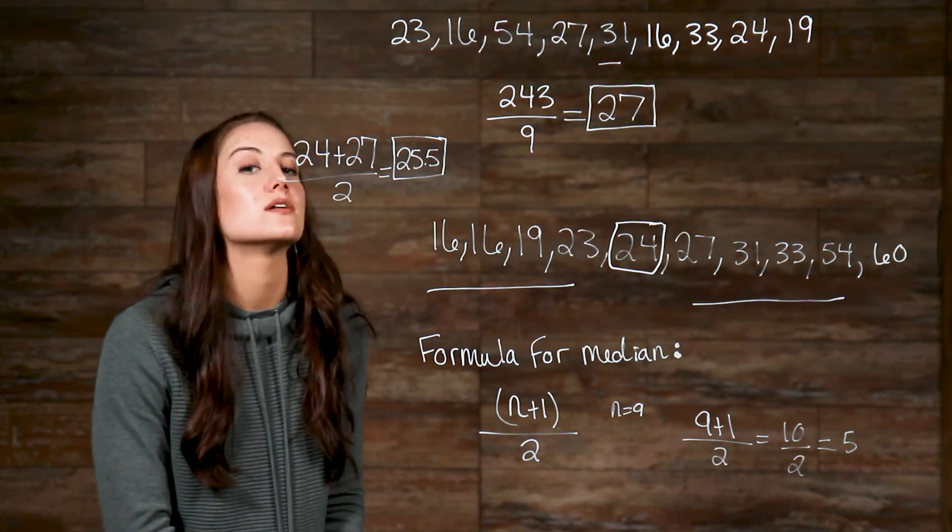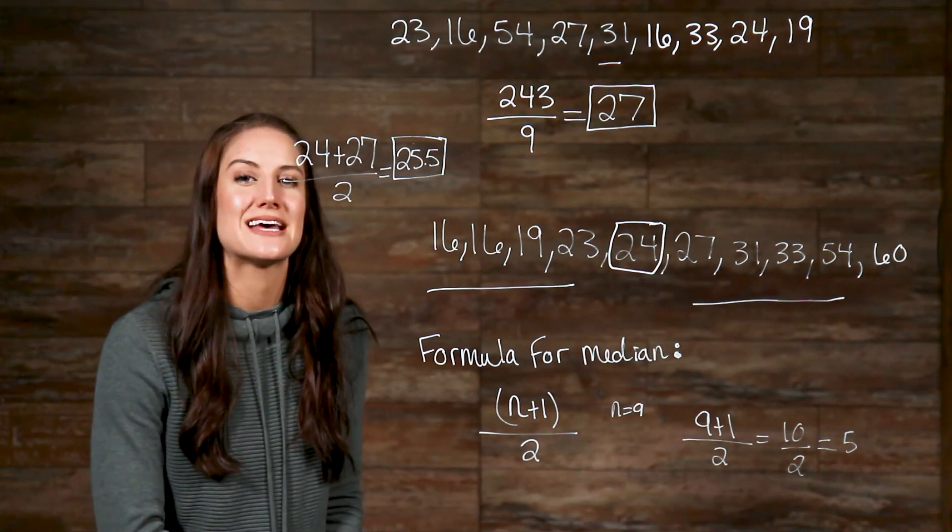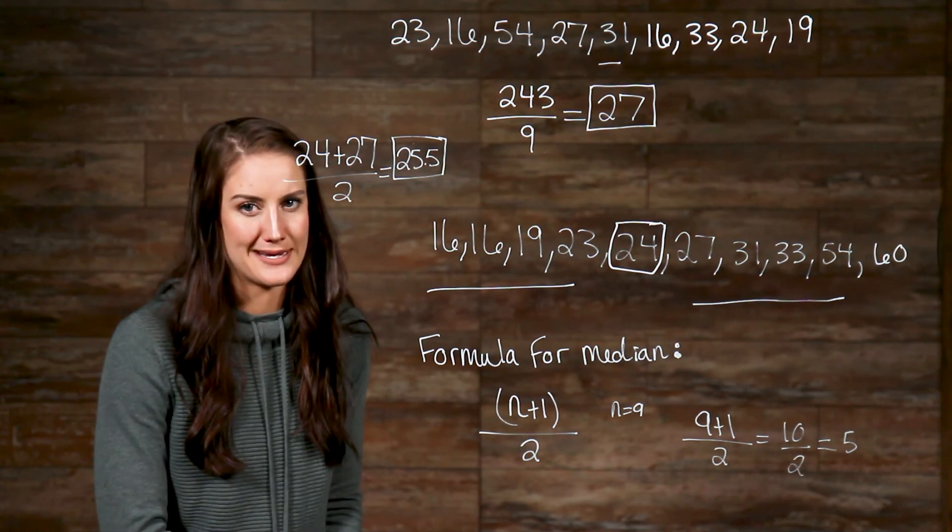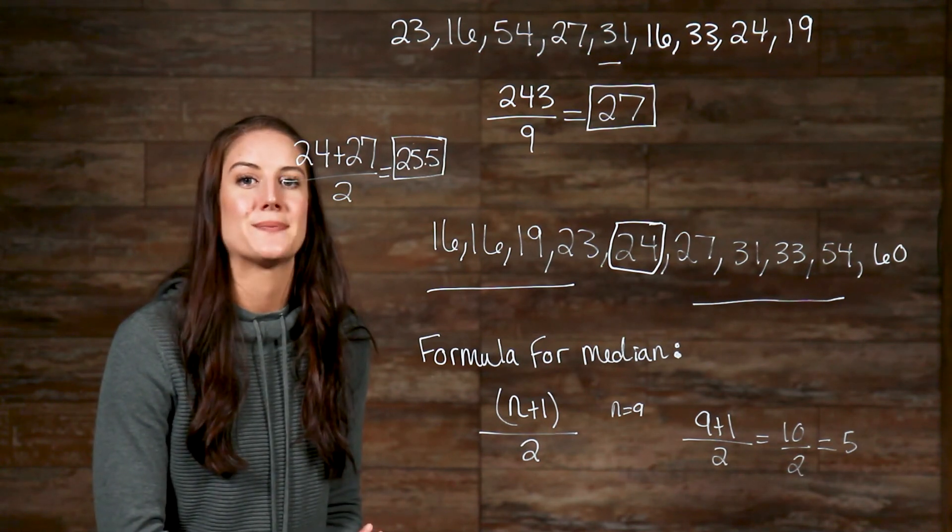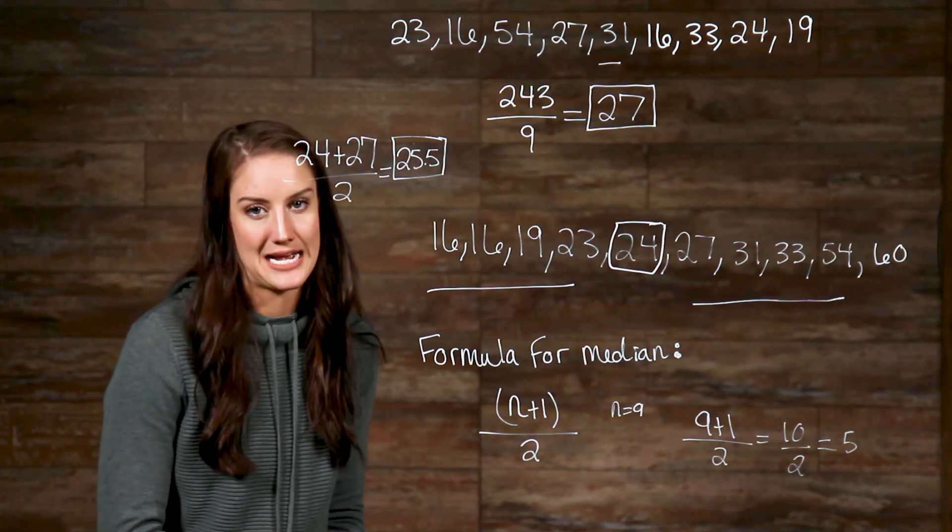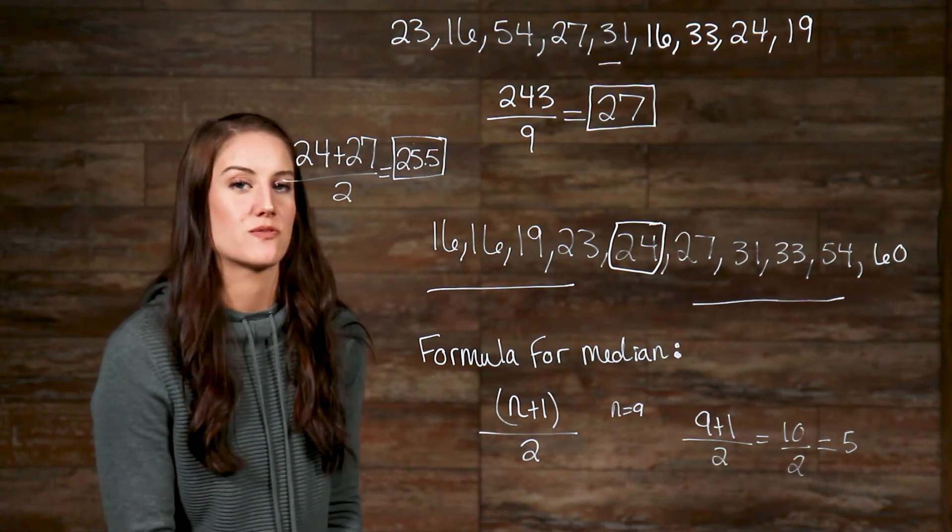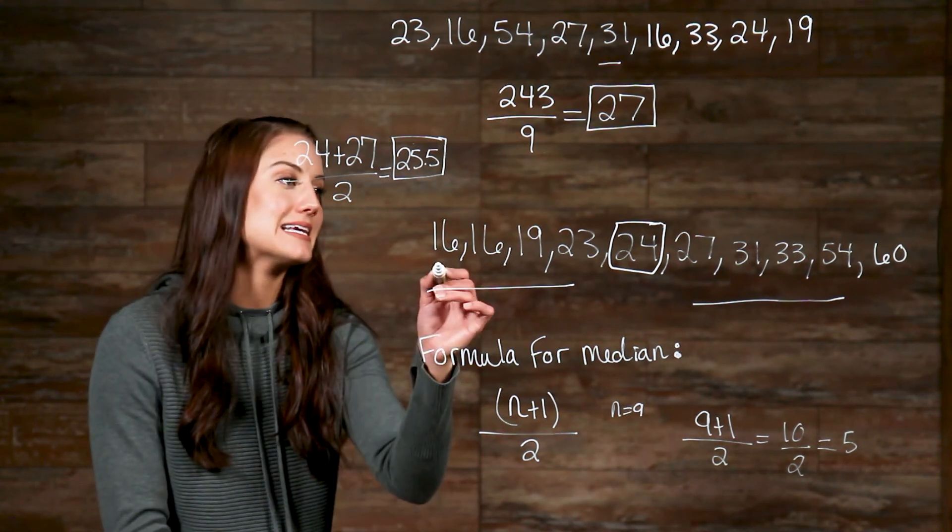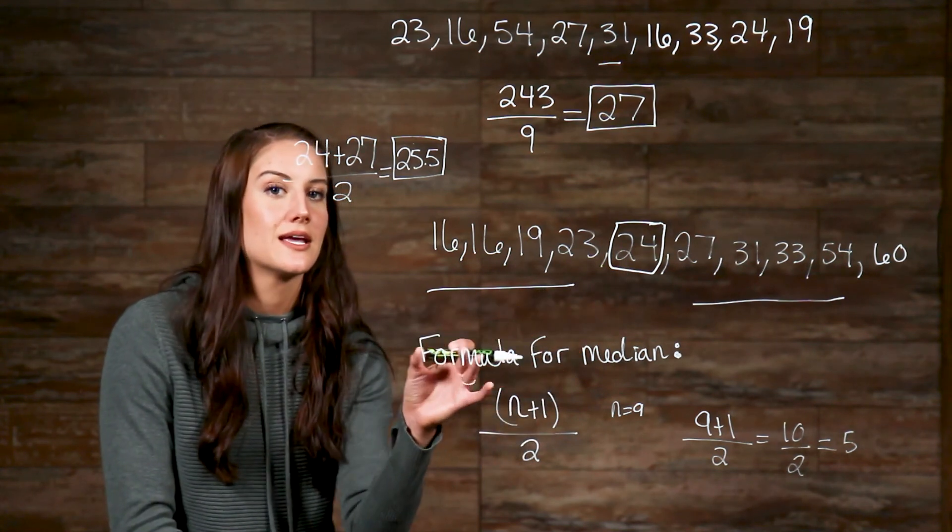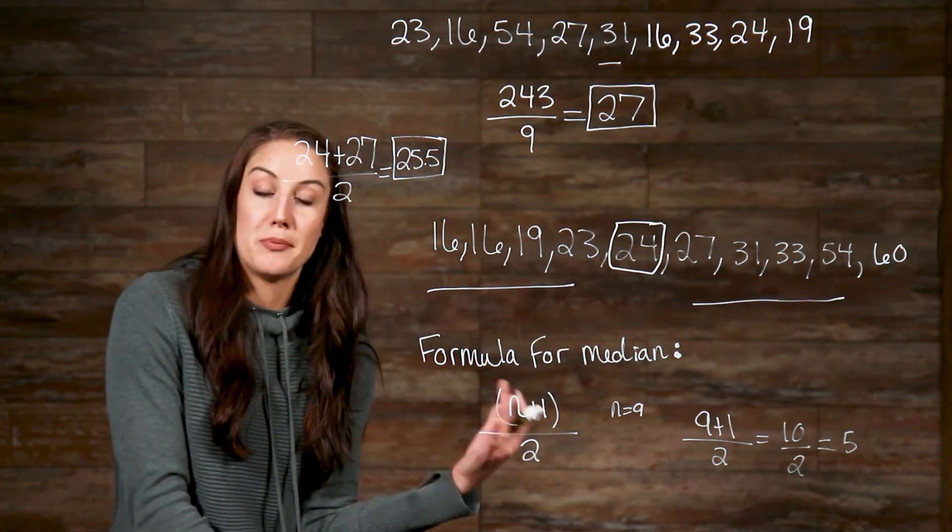Okay, now onto mode. Good news! The mode is definitely the simplest of the three to find. The mode is the number that appears the most amount of times. Taking a look at our list that we've been using, we can see that 16 is the only number that is being repeated. And that is our mode. Simple enough.